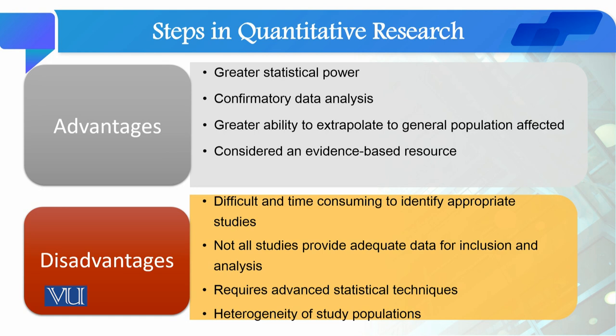Meta-analysis کرنے کے لیے آپ کو advanced statistical techniques درکار ہوتی ہیں — secondary data analysis کی technique اور advanced statistical knowledge ضروری ہے۔ آخری disadvantage ہے heterogeneity of study populations — ایک ہی hypothesis مختلف European، Eastern، اور American communities میں test ہوا ہوتا ہے اور ان کی cultural variation کو control کرنا بھی meta-analysis میں ایک مشکل کام ہوتا ہے۔ ان تمام وجوہات کی بنا پر meta-analysis ایک scientific لیکن difficult to perform کام ہے جس کے لیے certain skills ضروری ہیں۔